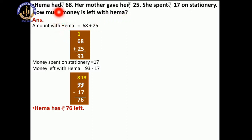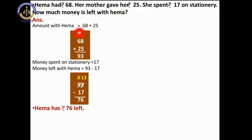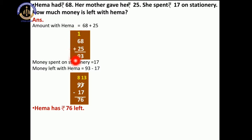So here Hema had Rs. 68. Amount with Hema is equal to 68, and her mother gave her Rs. 25. So 68 plus 25: 8 plus 5 is equal to 13, so write 3 on the one's place and carry 1. Now 6 plus 1 is equal to 7, plus 2 is equal to 9. So now Hema has Rs. 93.